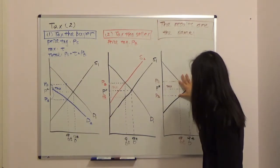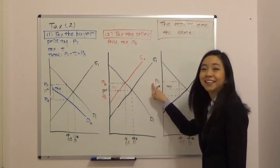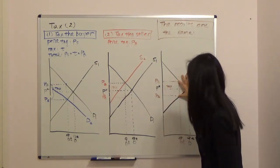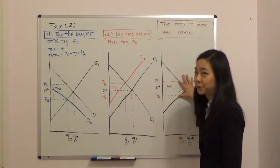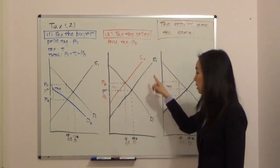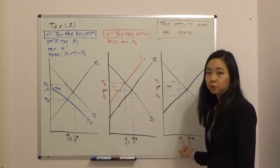And after that, you will be able to see the price paid by the buyer is higher. We call that PB. And the price received by the seller is PS. And it doesn't matter whether the government tax the buyer or the seller, the result is the same. The tax will increase the price paid by the buyer, reduce the price received by the seller, and also reduce the equilibrium quantity.